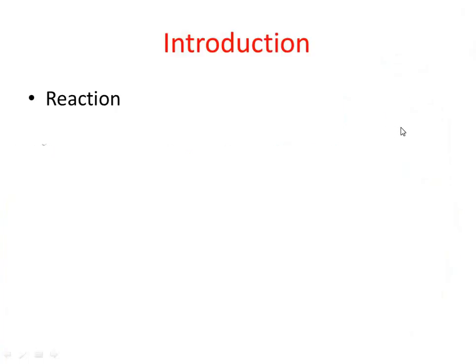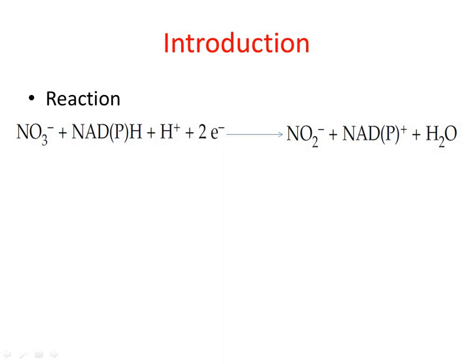The first step is the reduction of nitrate to nitrite in the cytosol. The enzyme nitrate reductase carries out this reaction. The stoichiometric equation is: nitrate + NAD(P)H + H⁺ + 2 electrons → nitrite (NO₂⁻) + NAD(P)⁺ + H₂O. Here, NAD(P)H indicates that either NADH or NADPH may be involved.